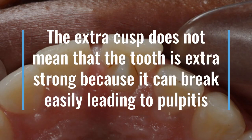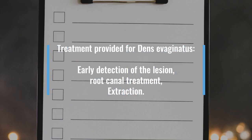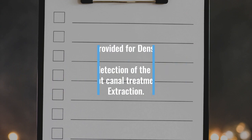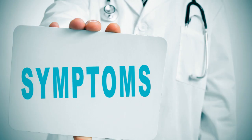For dens evaginatus, the extra cusp on the tooth does not make it stronger — it can break easily, leading to pulpitis, and afterward an RCT may be needed. The treatment provided for dens evaginatus includes early detection of the lesion, RCT, and extraction if necessary. Patients will not complain of any pain whether it is dens invaginatus or evaginatus; treatment is provided only once the patient experiences pain.